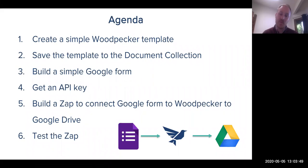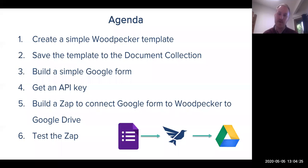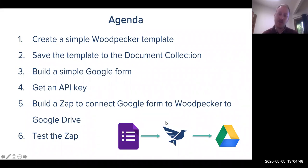Then we're going to get our API key from within Woodpecker itself — I'll show you where to do that in the settings page. Then we're going to build a Zap to connect the Google Form to Woodpecker and ultimately to Google Drive. Essentially, we'll fill out a client intake form via Google Forms, pass that client data to Woodpecker, and once the certificate of incorporation is prepared, it will be stored in Google Drive. This is just a basic example — the Google Drive and Google Forms pieces could be replaced with NetDocuments, Dropbox, SurveyMonkey, Typeform, JotForm, or whatever you want.